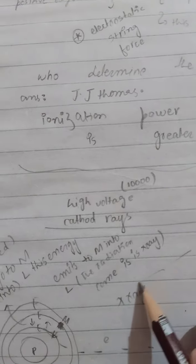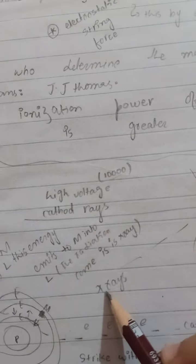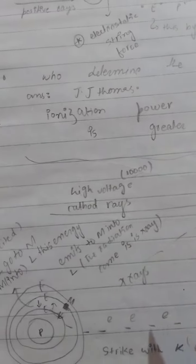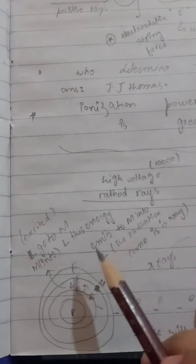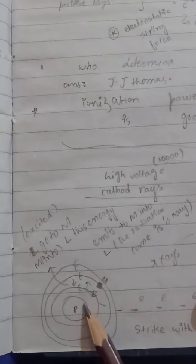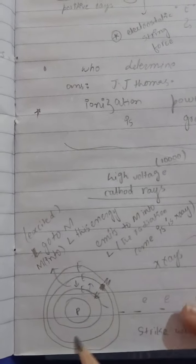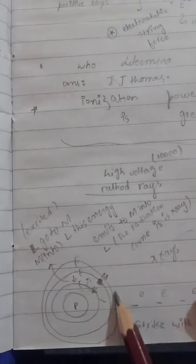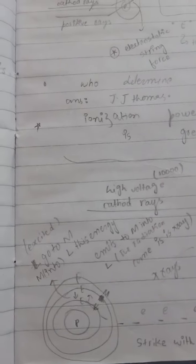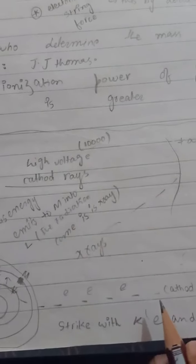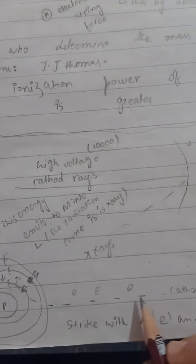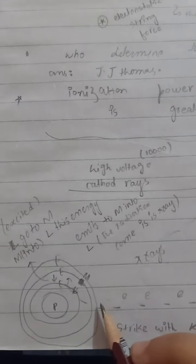How? See, this is the shell, the nucleus, and electrons are there which have high masses. So these cathode rays are coming from outside, meaning electrons are coming from outside and going to the outer shell.